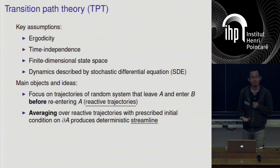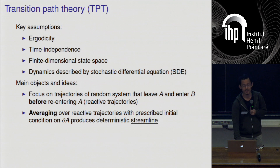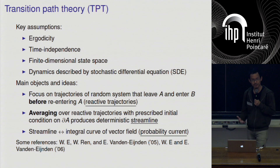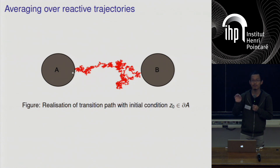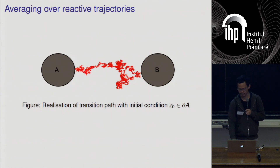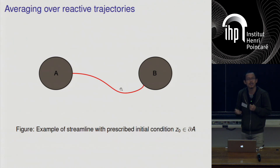A fundamental principle in mathematics is that if you take a whole bunch of random samples of something and average over that, you obtain a deterministic object which is smoother than your original rough random objects. That's precisely what we are going to do. We're going to take all our random reactive trajectories, average them, and obtain something called a deterministic streamline. This streamline turns out to be an integral curve of a vector field that we will call the probability current. So let's say we have metastable set A and another B, and we initialize all our random trajectories from some point Z0 on the boundary of A and launch an ensemble of reactive trajectories until they hit B. If we take this whole ensemble and average, ideally we get something smooth — a streamline that somehow represents the average behavior of what these trajectories do. What is on average the most likely way to go from A to hit B?